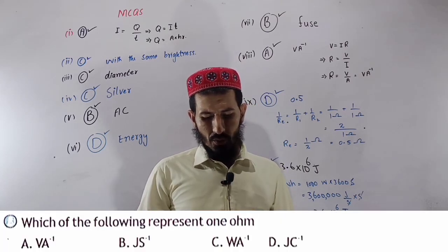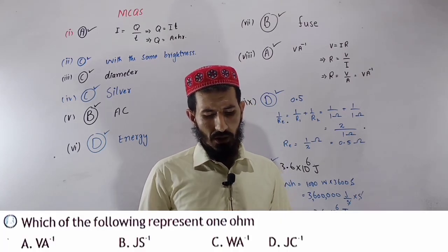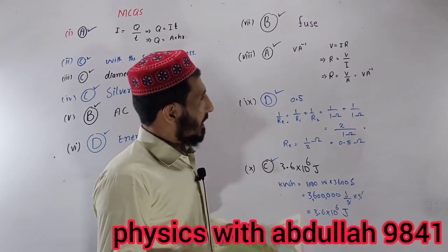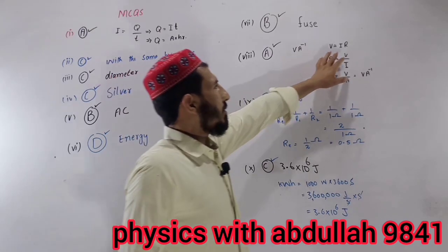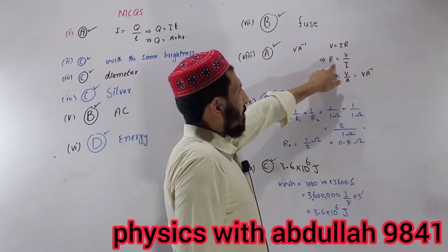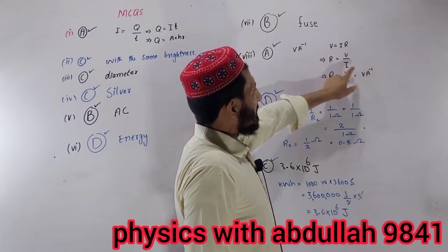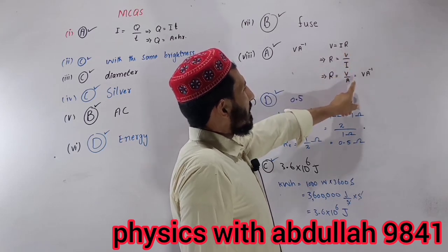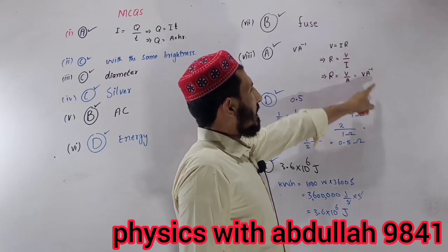Which of the following represents 1 ohm? The answer is A, volt per ampere. We can write V by I, where V is voltage unit volt and I is current unit ampere, so volt per ampere represents 1 ohm.